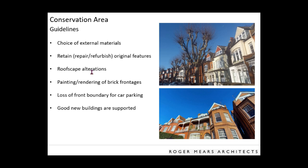Conservation areas throughout London all have quite similar guidelines, all there to make sure any intervention fits in with the context. When making any change, we need to look at the materials used — compatible materials, with a priority to repair rather than replace, but if replacing, materials should match the original. The roofscape is a really significant alteration — adding a dormer alters a pattern that can be quite cohesive. Even plastering a brick facade is a quite dramatic change. Loss of boundaries is not welcome. Good buildings are supported — if properly designed, new additions can be acceptable.